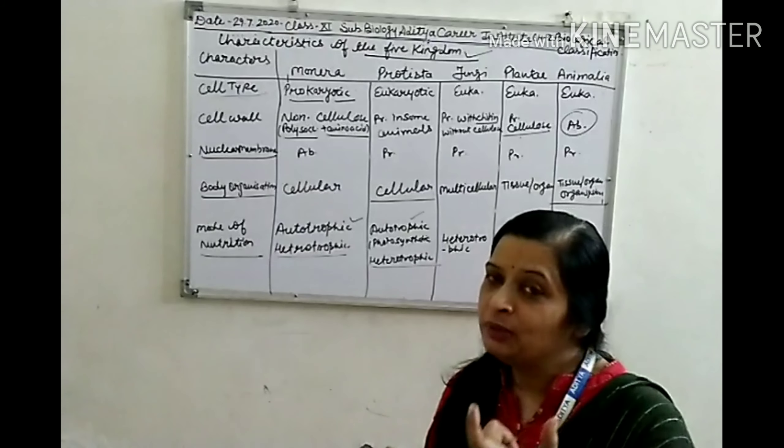In Fungi, they synthesize food through the process of photosynthesis. In Animalia, they are heterotrophic — they get their food from plants and other animals. These are the basic characters by which we can easily identify the different five kingdoms.